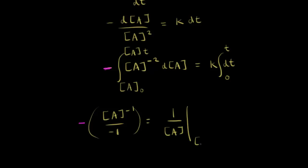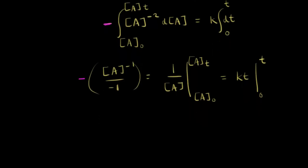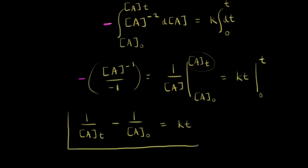On the right side, the integral of dT is just T, so we have KT evaluated from zero to T. Next, we use the fundamental theorem of calculus and plug in: one over the concentration of A at time T, minus one over the initial concentration of A, equals KT. So we've found our integrated rate law for a second order reaction.